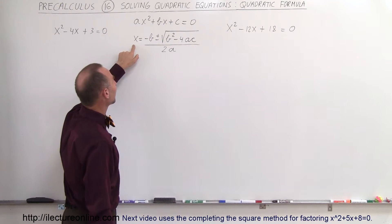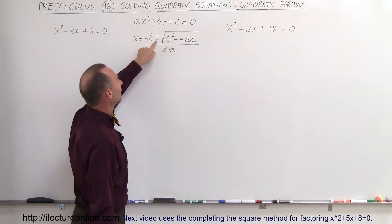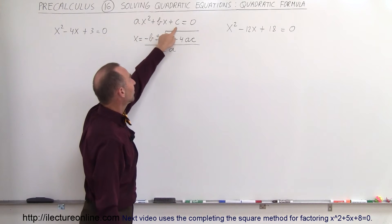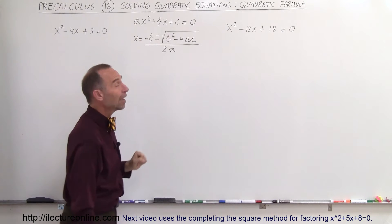The variable x can be found by taking the negative b plus or minus the square root of b squared minus 4ac divided by 2 times a.